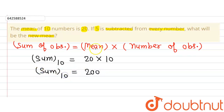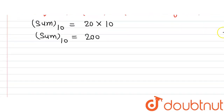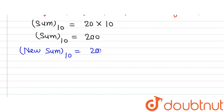The question says if 5 is subtracted from every number — there are 10 numbers — so 5 will be subtracted from each of the 10 numbers. The new sum will be the previous sum of 200 minus 5 subtracted 10 times, meaning 50 is subtracted in total.